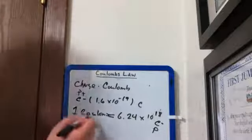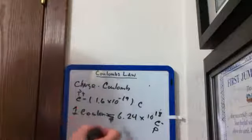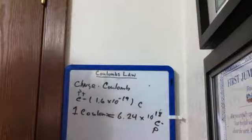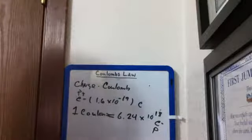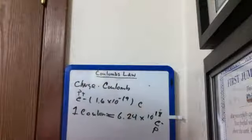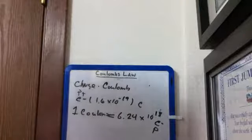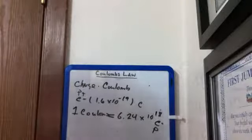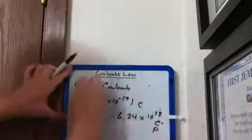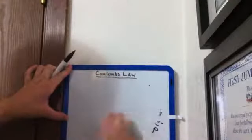So when we talk about one coulomb, that's a significant number of electrons for one coulomb. So generally when we talk about particles, we're going to be dealing with very small numbers, but certainly we can have macroscopic objects that are going to have coulombs of charge on them.